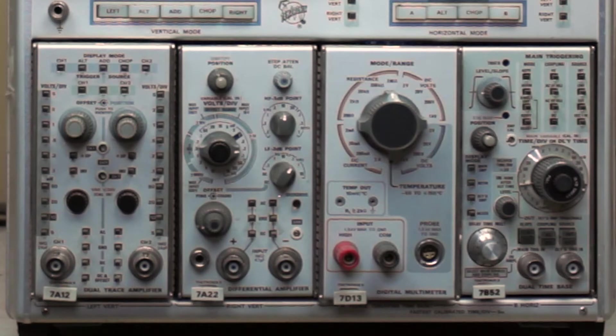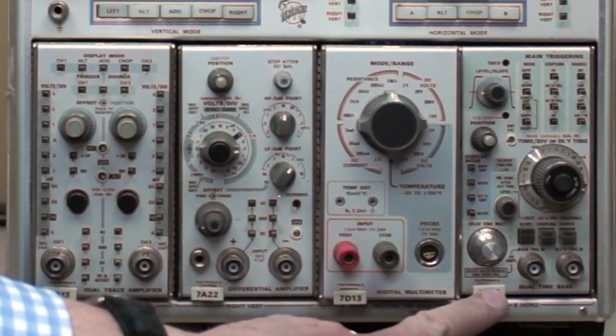In 2017, a handheld Fluke voltmeter is going to be better or certainly more convenient, but it's going to be a lot less cool. The last module here is the dual time base.